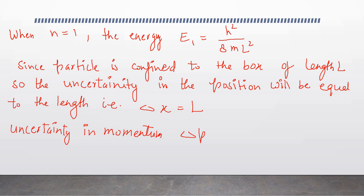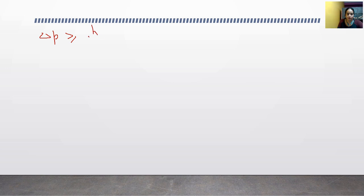Uncertainty in momentum, delta P. From Heisenberg uncertainty principle, delta x into delta p is greater than equal to h upon 4π. So delta p is greater than equal to h upon 4π delta x. Then delta p is greater than equal to h upon 4πL.